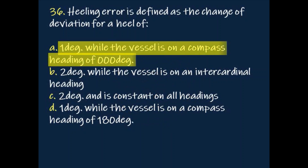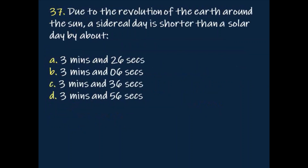Answer: 1 degree while the vessel is on a compass heading of 000 degrees. Question: Due to the revolution of the earth around the sun, a sidereal day is shorter than a solar day by about?